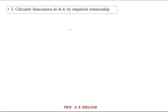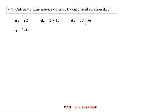Next, we find D0 (inner diameter of the eye) and D1 (outer diameter of the fork) from empirical relations. D0 = 2 × d = 2 × 40 = 80 mm. D1 = 1.5 × d = 1.5 × 40 = 60 mm.